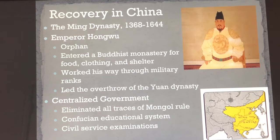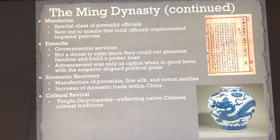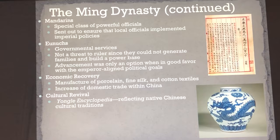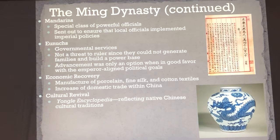He goes back to the Confucian educational system and the civil service exam to create a strong central government bureaucracy with educated people. The Ming Dynasty will focus on educating people through what's called the Mandarins — a special class of powerful officials educated through the Confucian system implementing imperial policy. The eunuchs are also part of this official class; they are government service people who cannot marry, so many feel they will never try to dethrone whoever is in power since they cannot generate families.